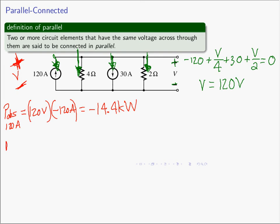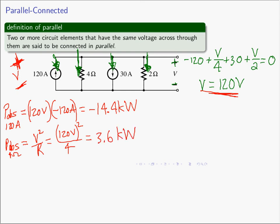What is the power being absorbed by the 4 ohm resistor? There are many ways to find it — V times I, or V squared over R. We just found V = 120 volts, so the power absorbed is 120 squared divided by 4, which equals 3.6 kilowatts.